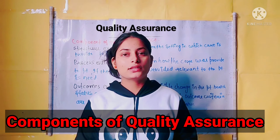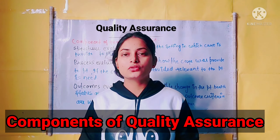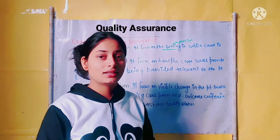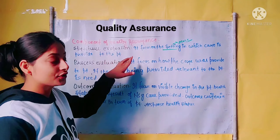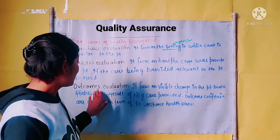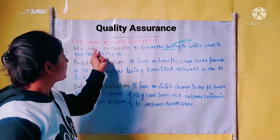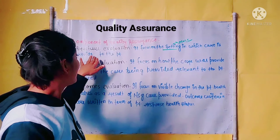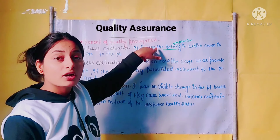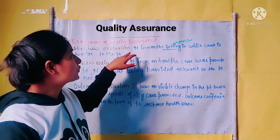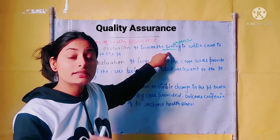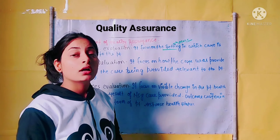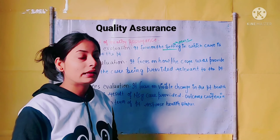Now we have the components of quality assurance, which are important for quality care. Quality assurance components are three: first is structure evaluation, second is process evaluation, and third is outcomes evaluation. Structure evaluation focuses on the settings in which care is provided to the patient.